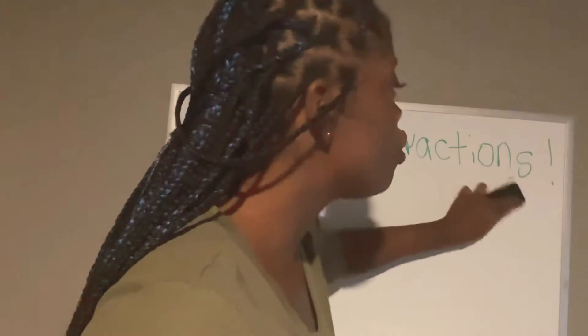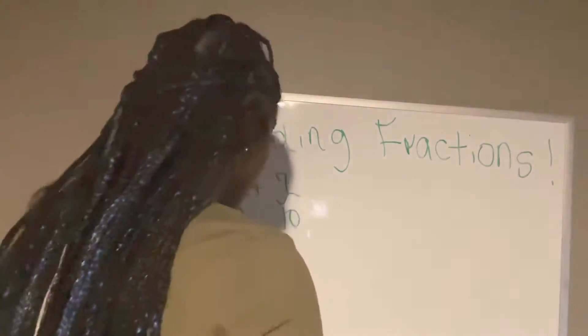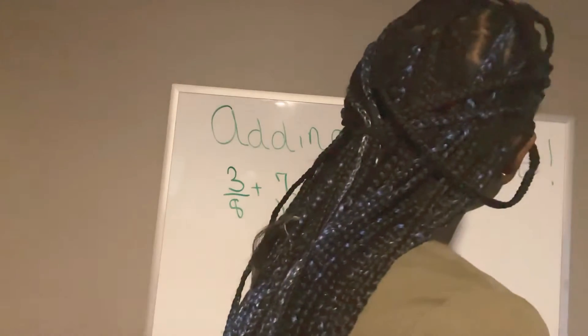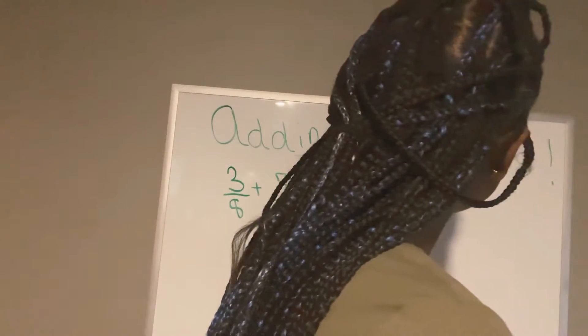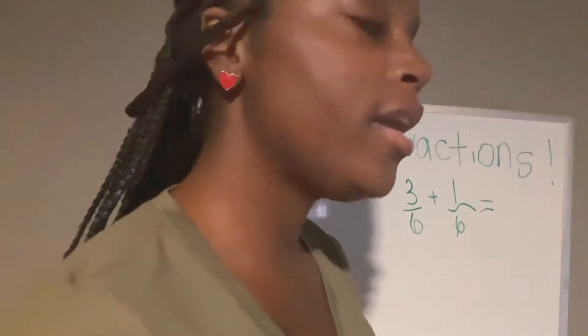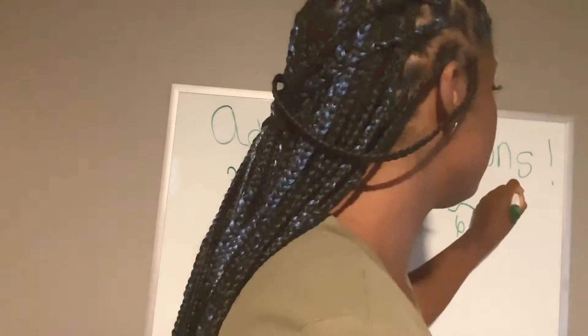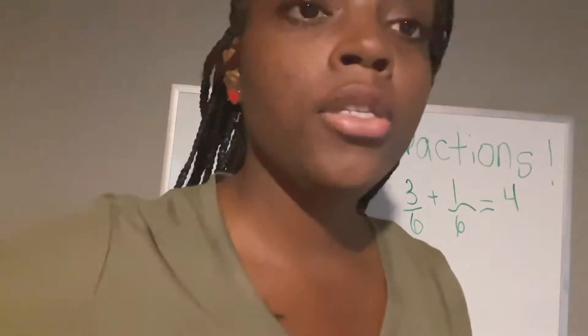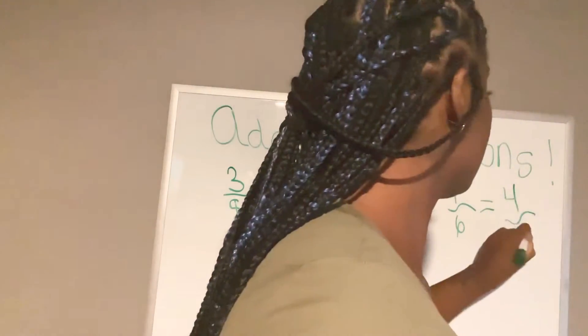I'm going to do another adding problem with the same denominator. Like I said, everything is based on the denominators. If the denominator is the same, you add straight across and you keep the denominator the same — you do not change the denominator. So three plus one is four. Do we add six plus six? No, we don't. We keep the denominator the same, we just bring it over. Four over six.